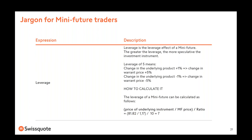Leverage: for all derivative products, the greater the leverage, the more speculative the investment. A leverage of five means that if the underlying security rises one percent, the product price rises five percent — and equally, if the underlying loses one percent, the product loses five percent. To calculate leverage for a mini future, use this formula: price of the underlying instrument divided by the mini future market price, divided by the ratio.